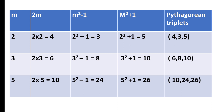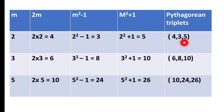Here we take m = 2. We know that m must be greater than 1, so m can be 2, 3, 5, or any positive integer greater than 1. When m = 2: 2m = 4, m²−1 = 3, and m²+1 = 5. So 4, 3, and 5 form one Pythagorean triplet.